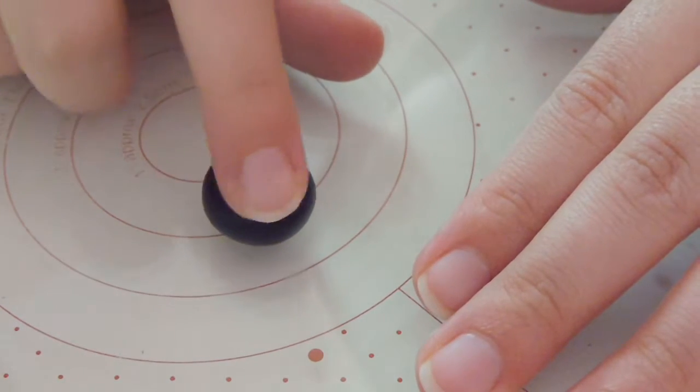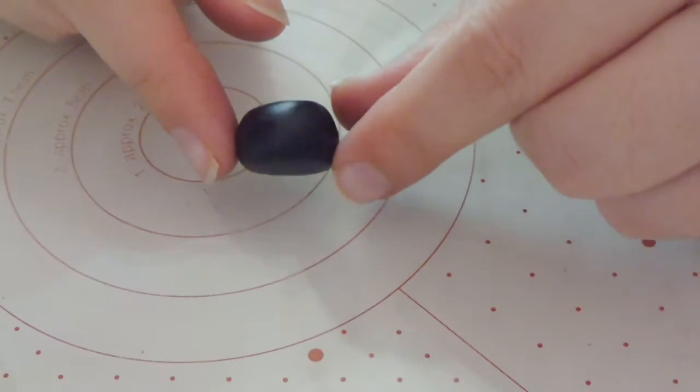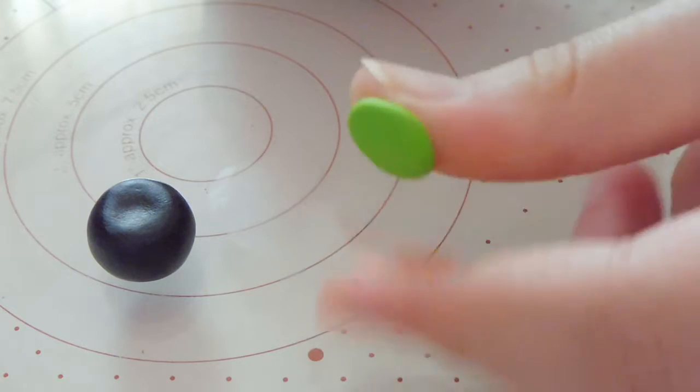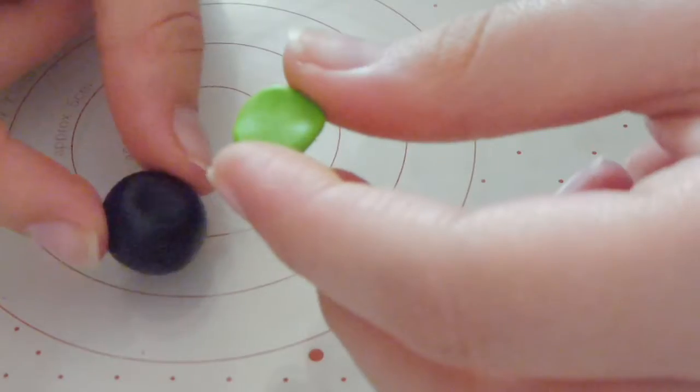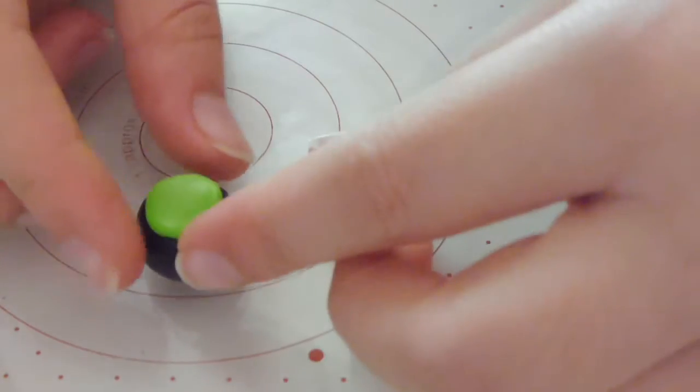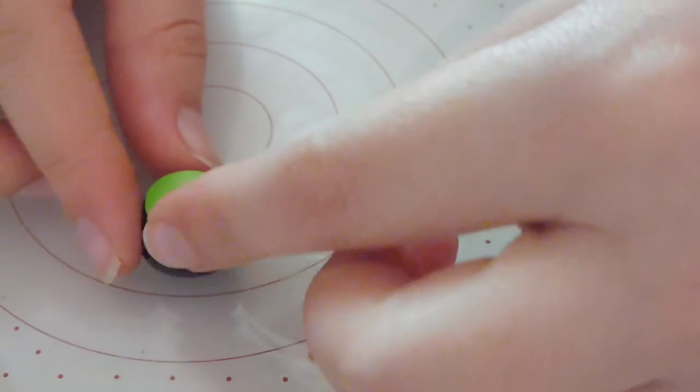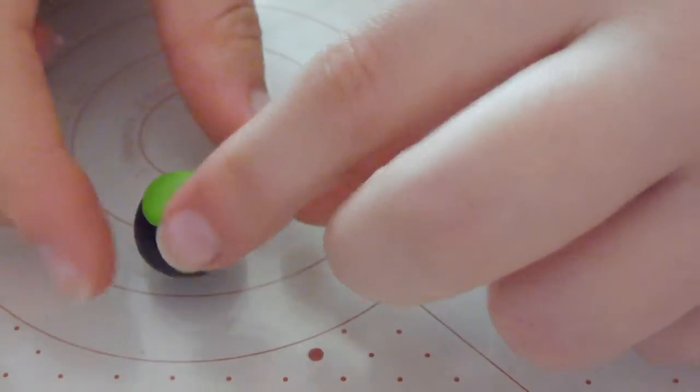Next, we're taking our green and squishing it down into a nice disc shape, and apply this on the top of our flattened ball. Work around with it until you're happy with the way it's fitted on the top of your cauldron.